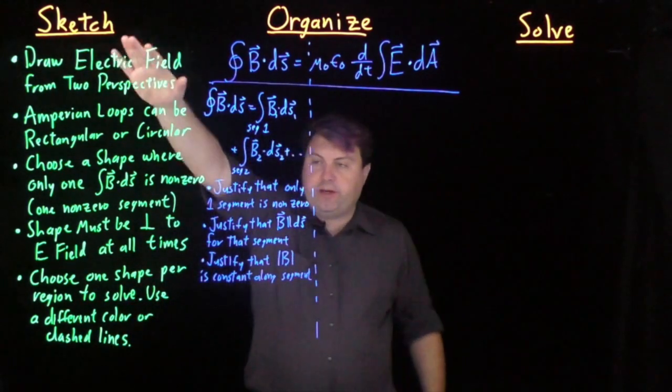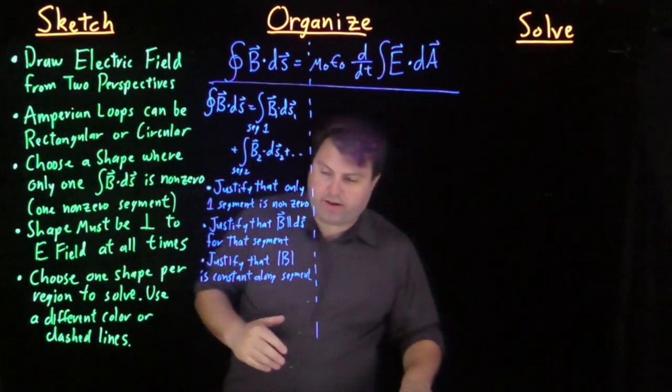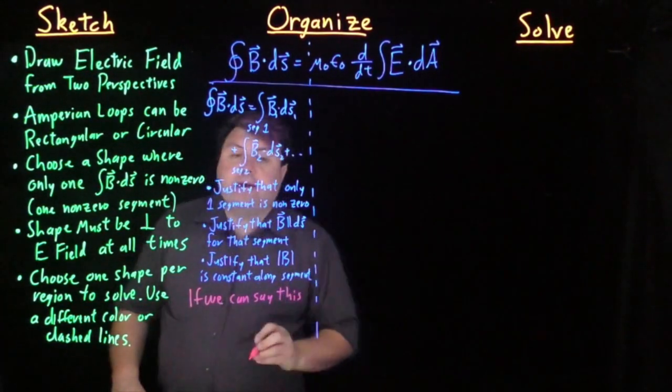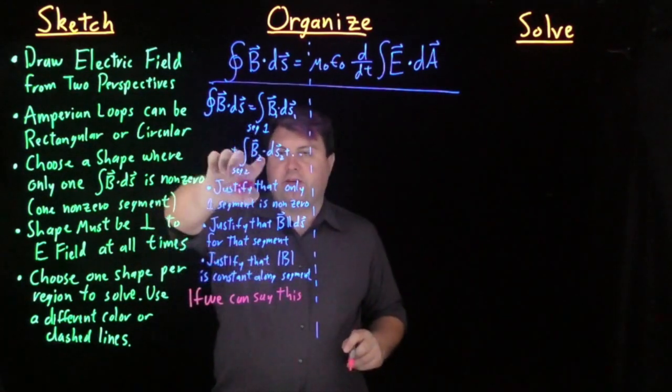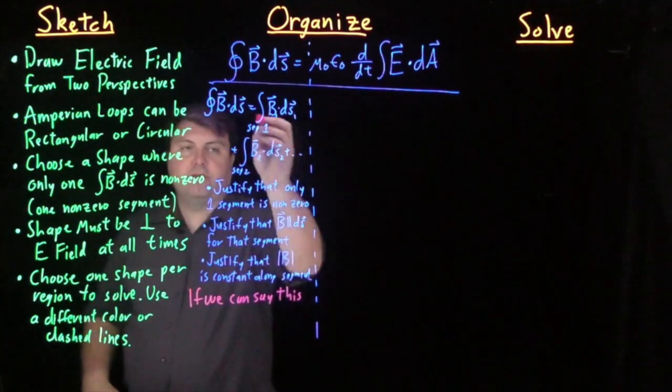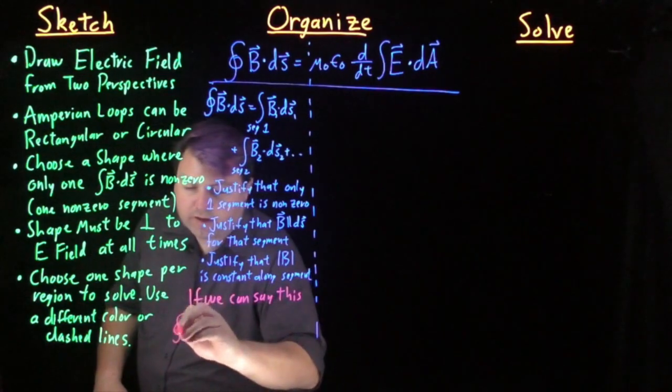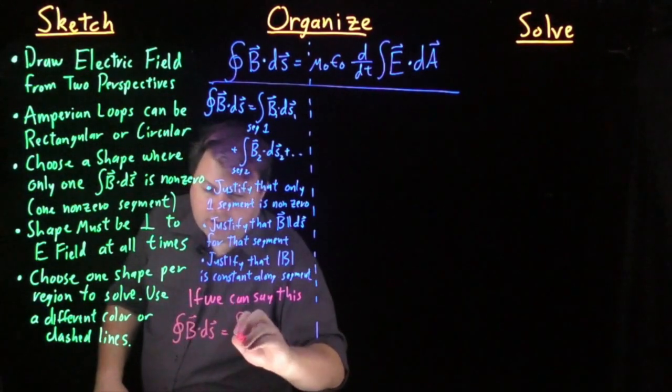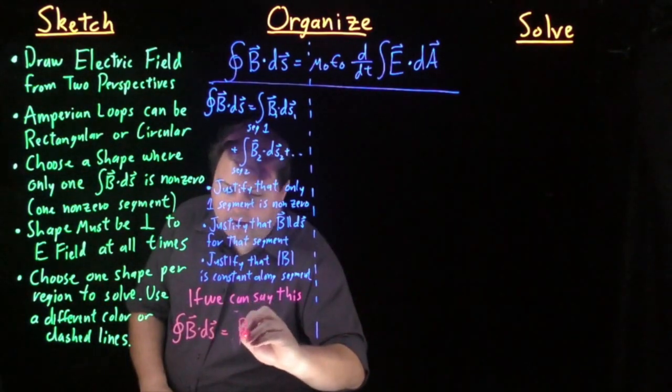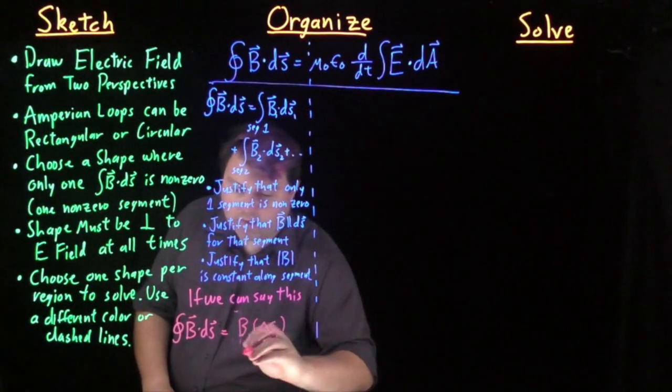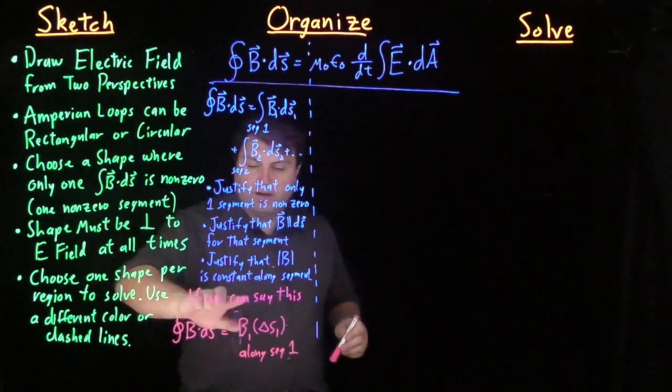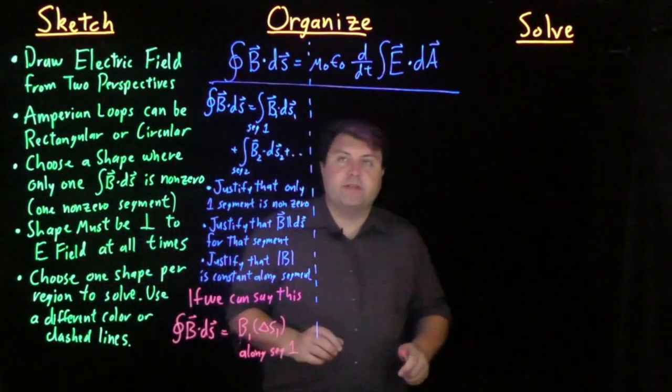But the good news is, if we can sketch it out, if we can plan it out, if we can justify all this, then we're able to pull the magnetic field B out of the integral since it's constant. We don't worry about the dot product because everything's parallel. And so we can take an integral of just ds. And so then we get that our closed integral of B·ds becomes not an integral, but just the magnetic field at segment one times the delta s for segment one along segment one. So if we're allowed to say this, then we get just this easy relationship.